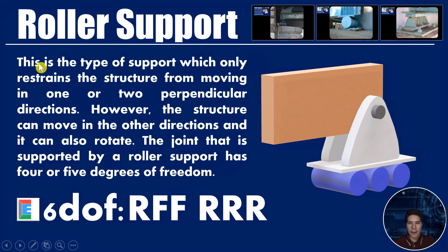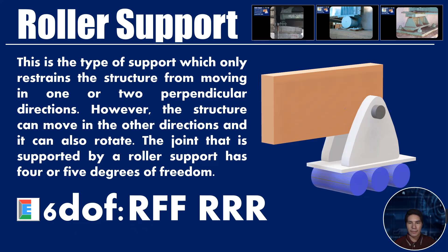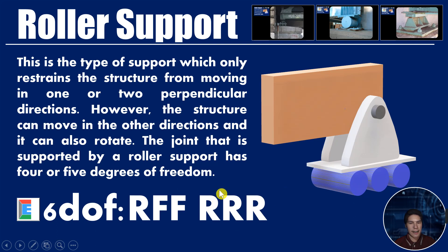The roller support only restrains the structure from moving in one or two perpendicular directions; the structure can move in the other three directions and can also rotate. A joint supported by a roller has four or five degrees of freedom. The restraint code for a roller is: R for x translation (can move along x axis), F for y and z translation, and R for x, y, and z rotation — meaning it can rotate freely about all three axes.